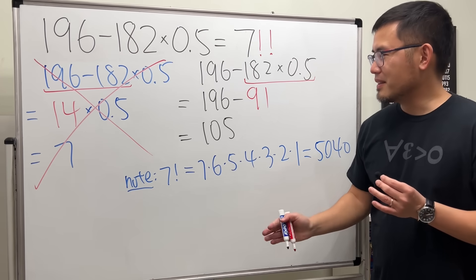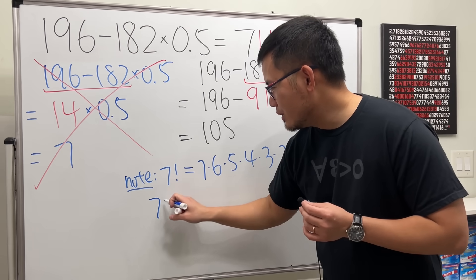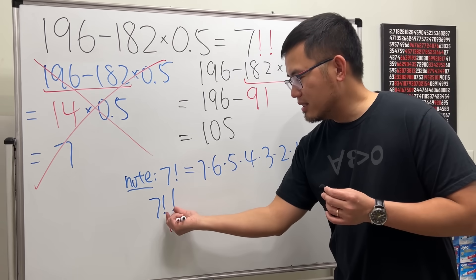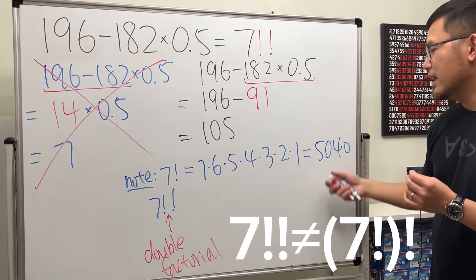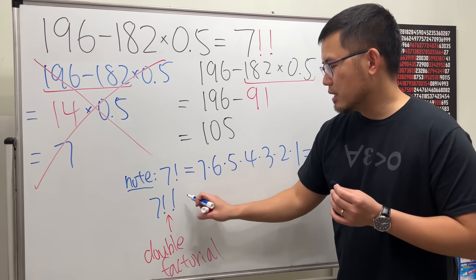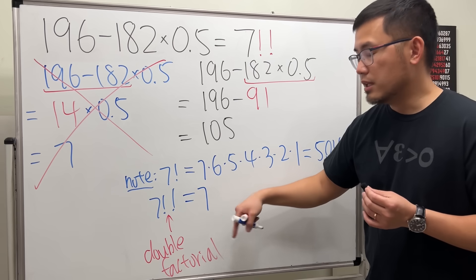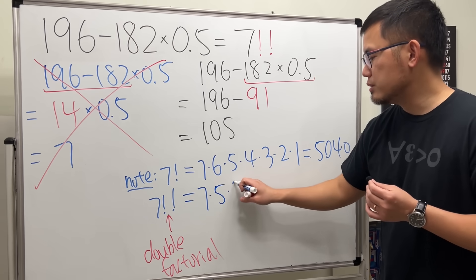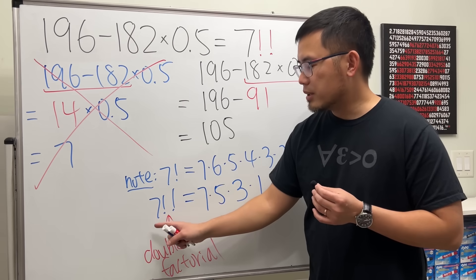But when we have two exclamation marks, this is the double factorial. It doesn't mean you do the factorial and then do the factorial again — it's a notation. The double factorial means you start with the number, and if it's an odd number you go to the next odd number: 7 times 5 times 3 times 1. If you have an even number like 8, you do 8 times 6 times 4 times 2.